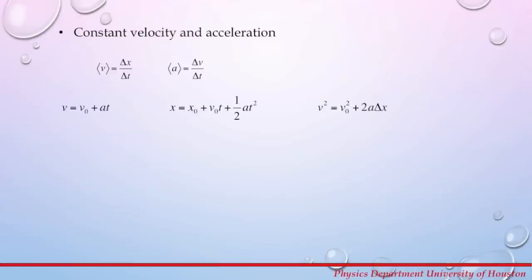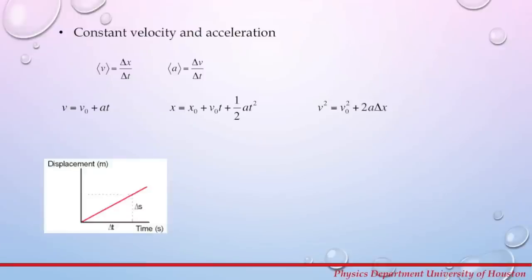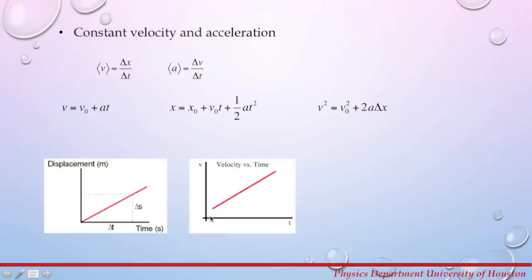These definitions lead to the kinematic equations for constant acceleration. If we plot displacement as a function of time, we get a straight line whose slope gives us velocity and the y-intercept gives us initial position. If we plot velocity as a function of time, we also get a straight line. The slope of this line is the acceleration, and the y-intercept is the initial velocity.